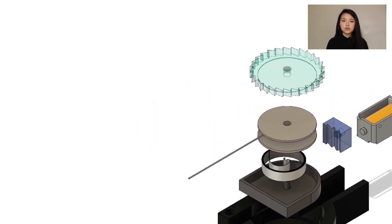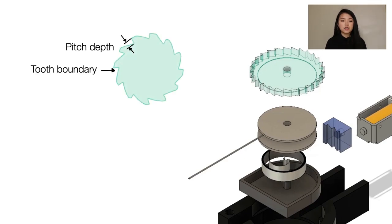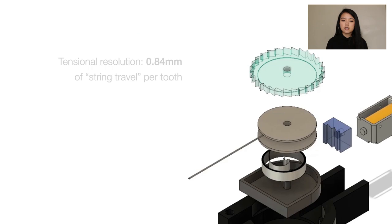High tensional resolution can mitigate visual haptic mismatches. Since the pawl can only latch the gear at tooth boundaries, the resolution can be increased with a greater tooth count, but that also means the pitch depth would decrease, making it harder for the pawl to engage with the ratchet securely. After many iterations, we achieved a final resolution of 0.84 mm per tooth.